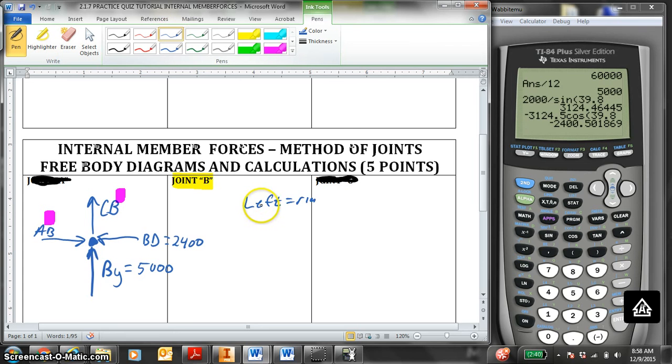So let's just play the tug-of-war game. Left equals right. BD is going to the left. It's going towards joint B equals to the right, AB. So AB internal member force is 2400. And it's also in compression, because it's towards the pin. So you put a C here. That is one way to write AB.